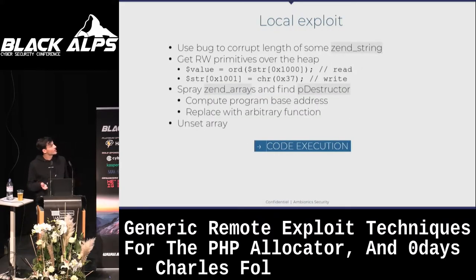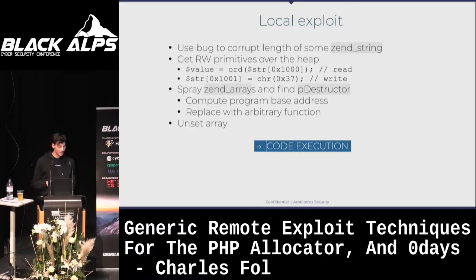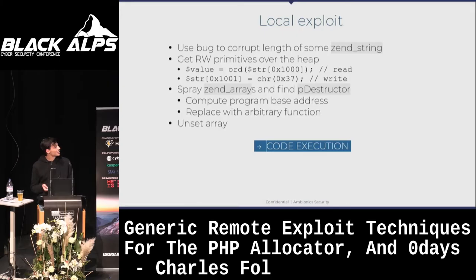Now you have enough to understand the local PHP exploit — it's really easy. You use a bug to corrupt the length of some ZendString so it's way bigger than it should be. Then you get read-write primitives over the heap for free using the array notation. You spray arrays, find the address of a pDestructor in the leaked heap, change this pDestructor, unset the array, and pDestructor gets called — code execution. Very simple.